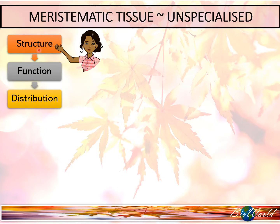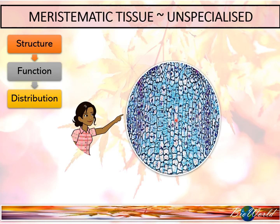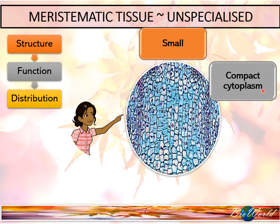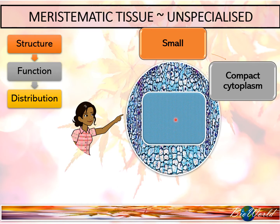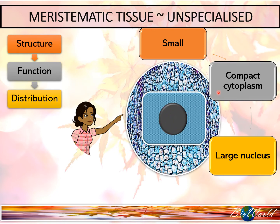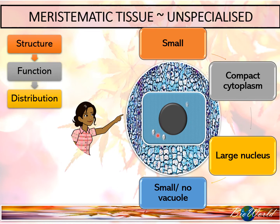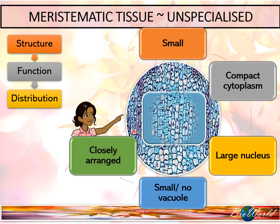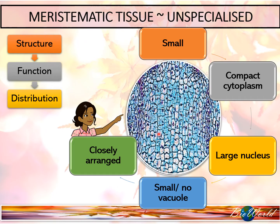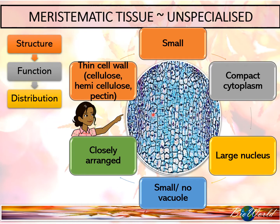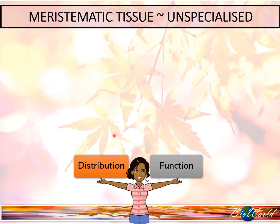I will now start with the structure of the meristematic cells. As you can see, the cells are small and the bluish color shows us that it has compact cytoplasm. The cell has a large central nucleus. Since the cytoplasm is compact, there will be no vacuoles; however, if vacuoles are present, they will be very small. The meristematic cells are all very closely packed together, and their cell walls are very thin, made up of the basic cellulose, hemicellulose, and pectin.